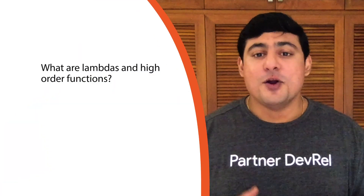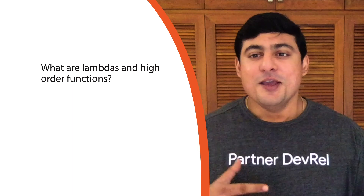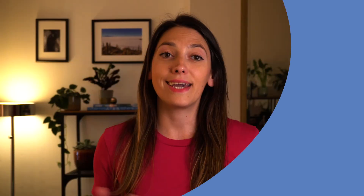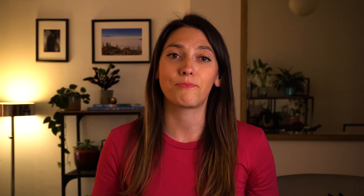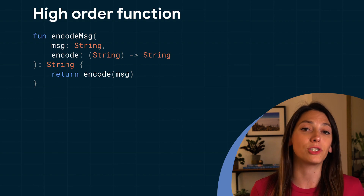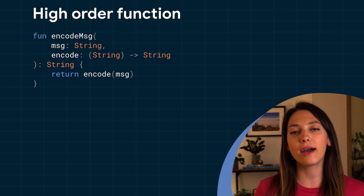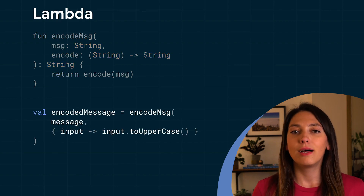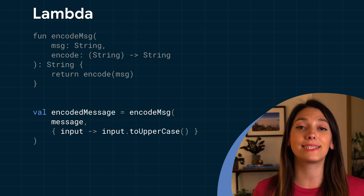We keep hearing about higher-order functions and lambdas — can you explain what they are? In Kotlin, functions are a first-class citizen, which means they can be stored in variables, passed as a parameter to another function, or functions can return other functions. A function that takes another function as a parameter or returns a function is called a higher-order function. Lambda expressions are functions that are not declared, but passed as an expression.